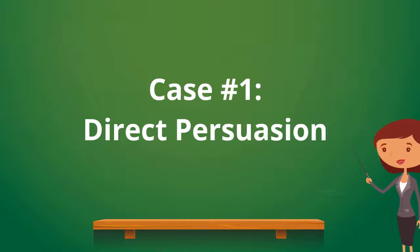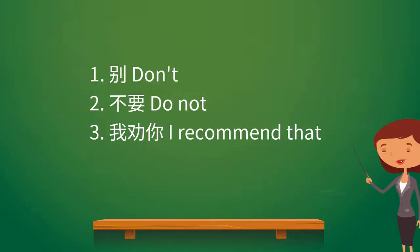Direct persuasion is also used in emergency situations. When doing so, a firm and assertive tone is efficient enough to bring about a change. Some commonly used phrases to make direct persuasions are 别, 不要, and 我劝你.